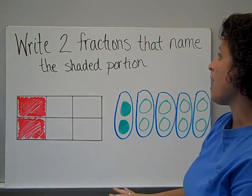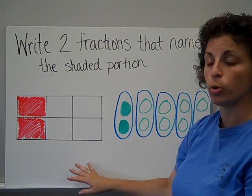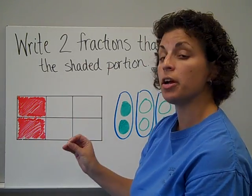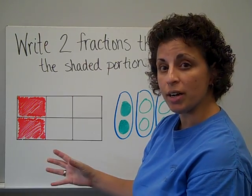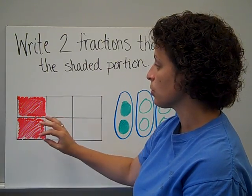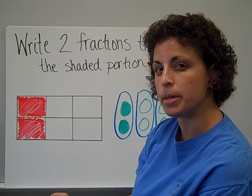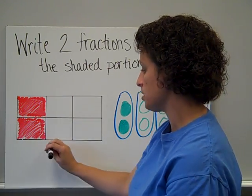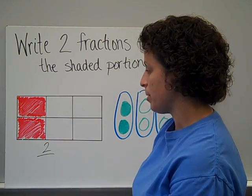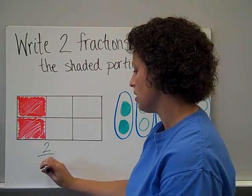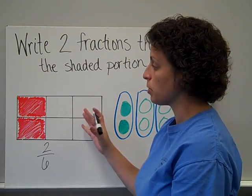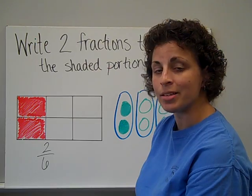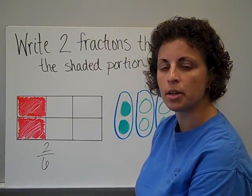We want to write two fractions to represent the shaded portion in these two models. Just like before, we are going to write a fraction, but I want to think about the size of the piece. So right here I can see, obviously, that I have two parts shaded, that's my numerator, out of how many pieces in all? Six. So two-sixths is a fraction that is represented by this model. But a moment ago I changed the size of the piece. I started with a larger piece and I cut them smaller.